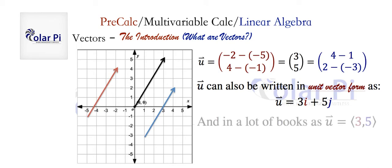In a lot of books, instead of the column form, a lot of books prefer writing it with these brackets here. X component first, 3, and then y component next, 5.